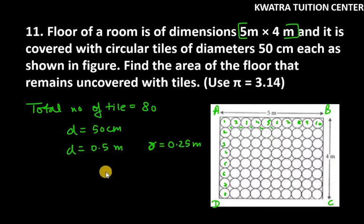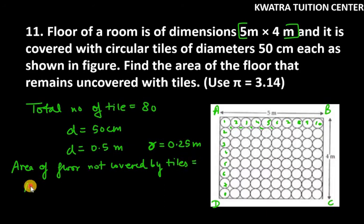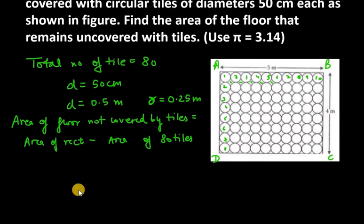Now, we have to find area of floor not covered by tiles. So, let's find this. Area of floor not covered by tiles. It will be area of rectangle minus area of 80 tiles. We have to find the area of 80 tiles as well to find area of floor which is not covered by tiles. Now, area of rectangle.